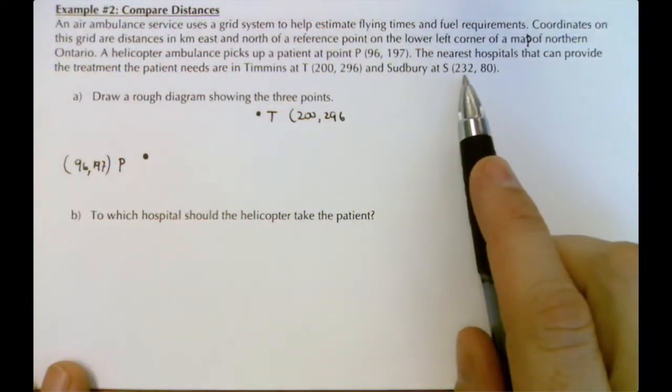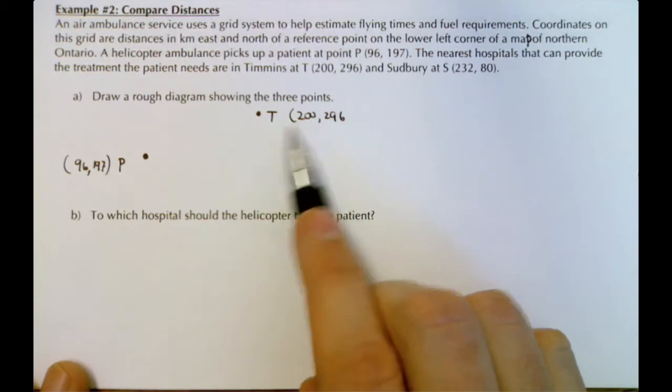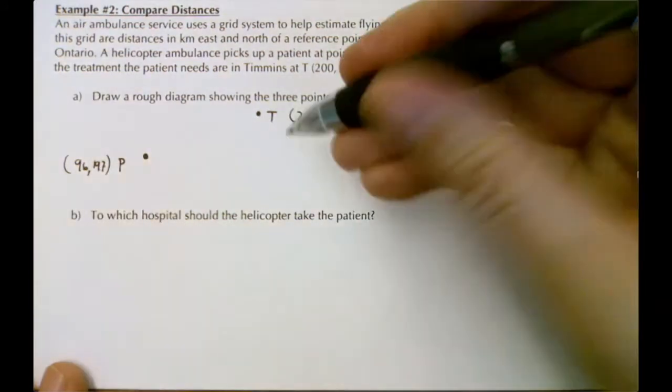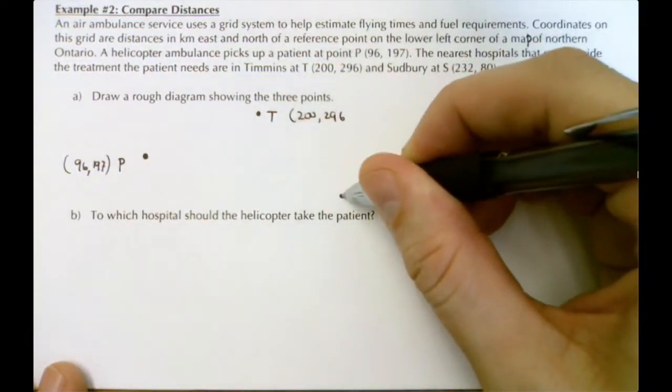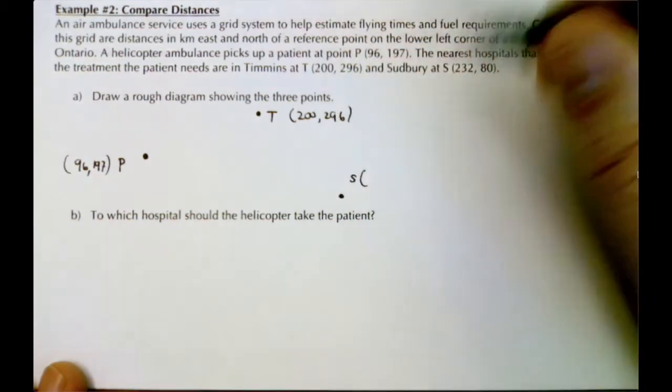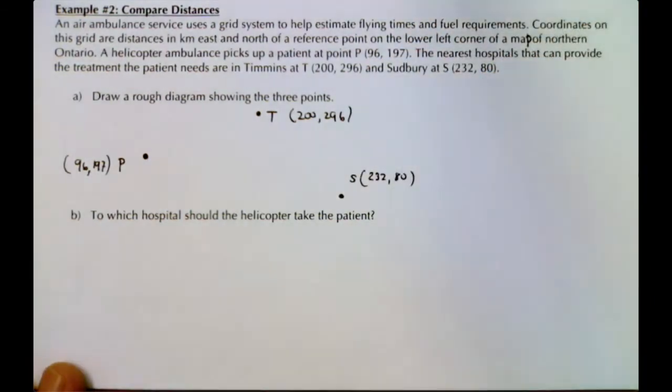Sudbury is (232, 80). Well, 232 is bigger than 200, so it's further to the right, and 80 is less than 197, so I'm going to put it way down here. So Sudbury is (232, 80).